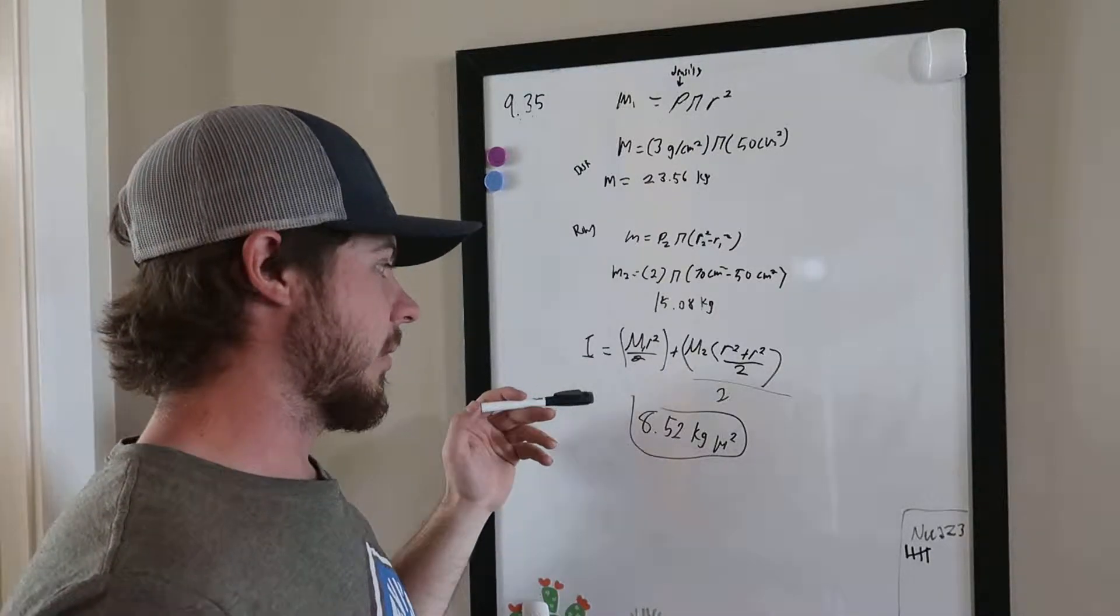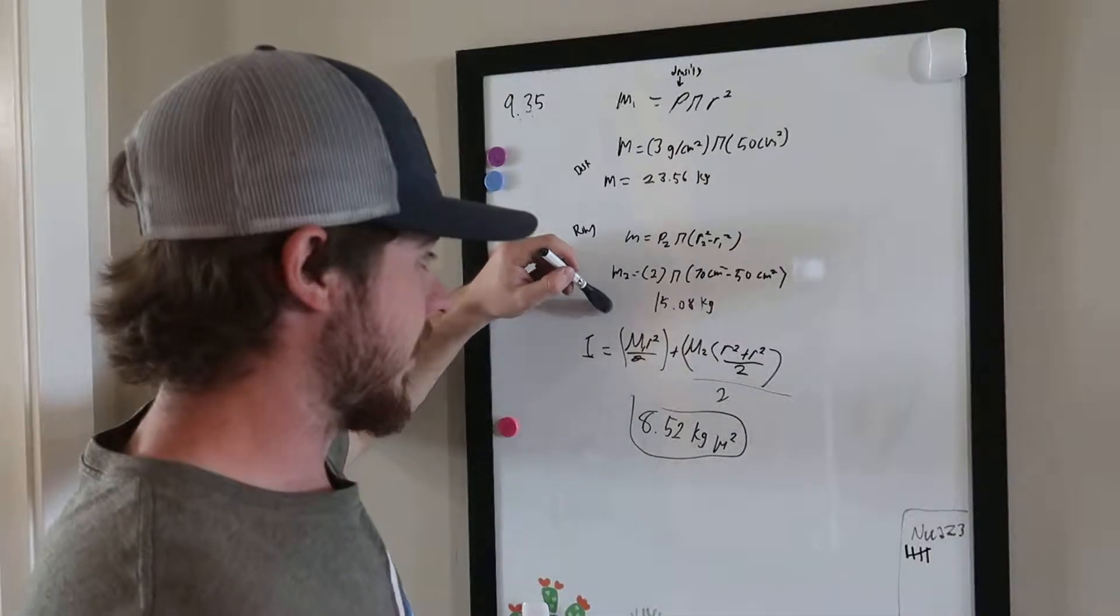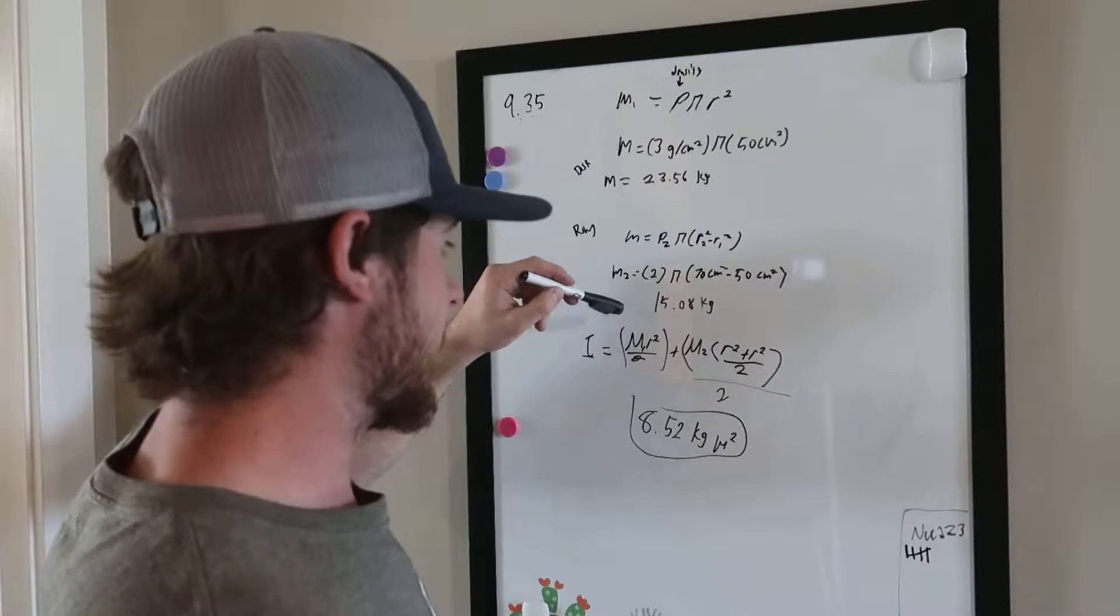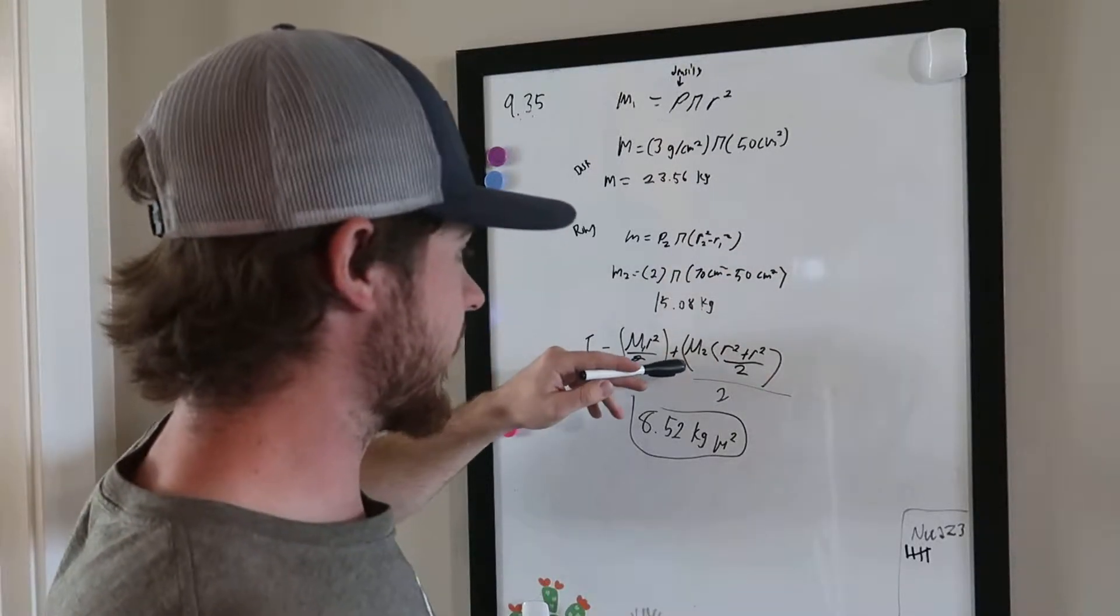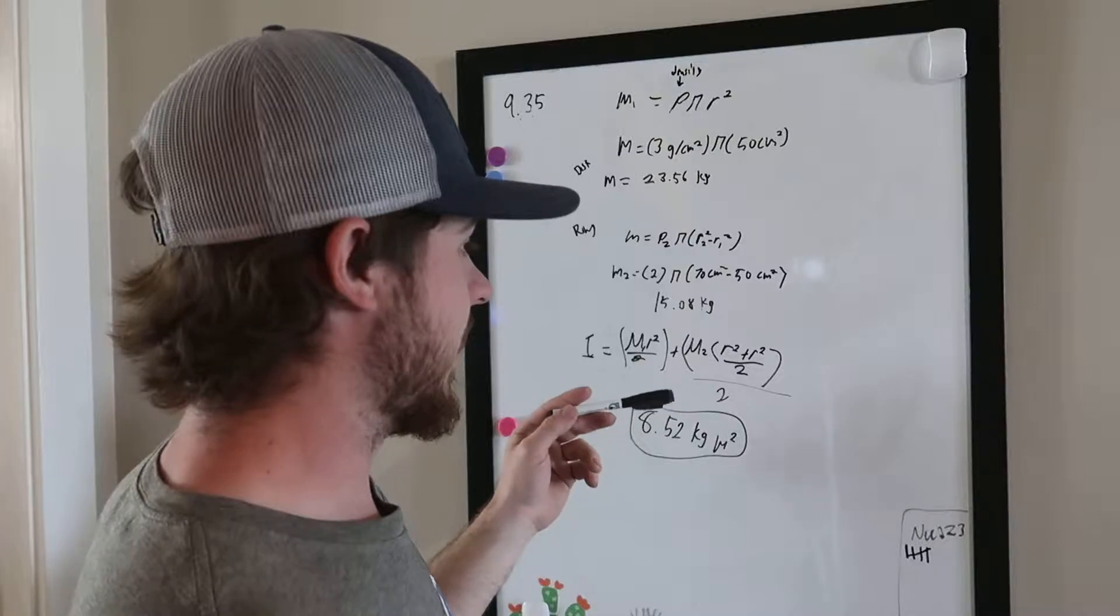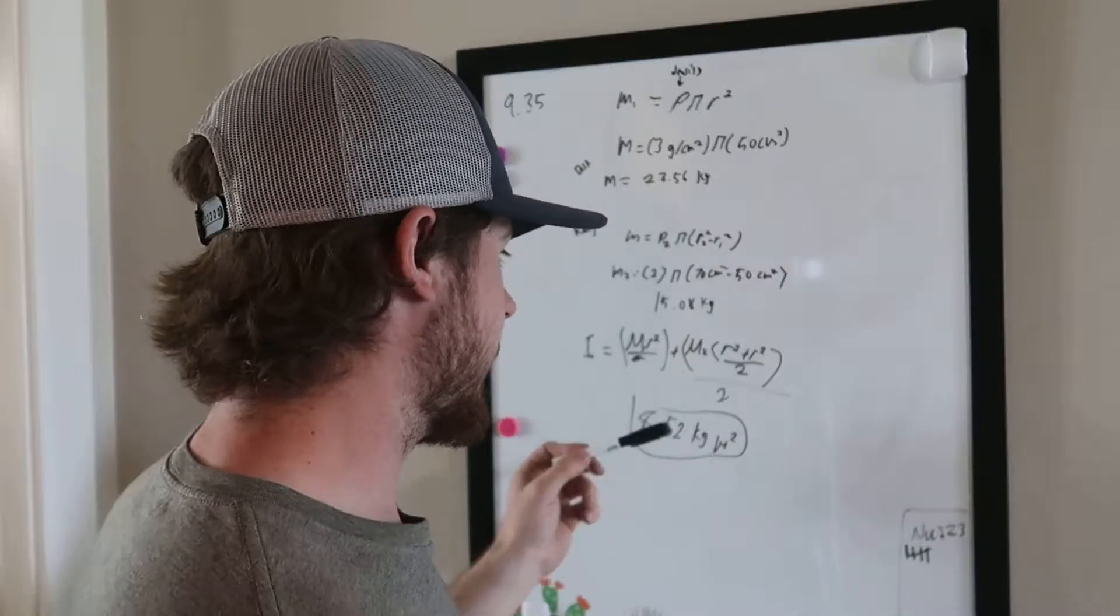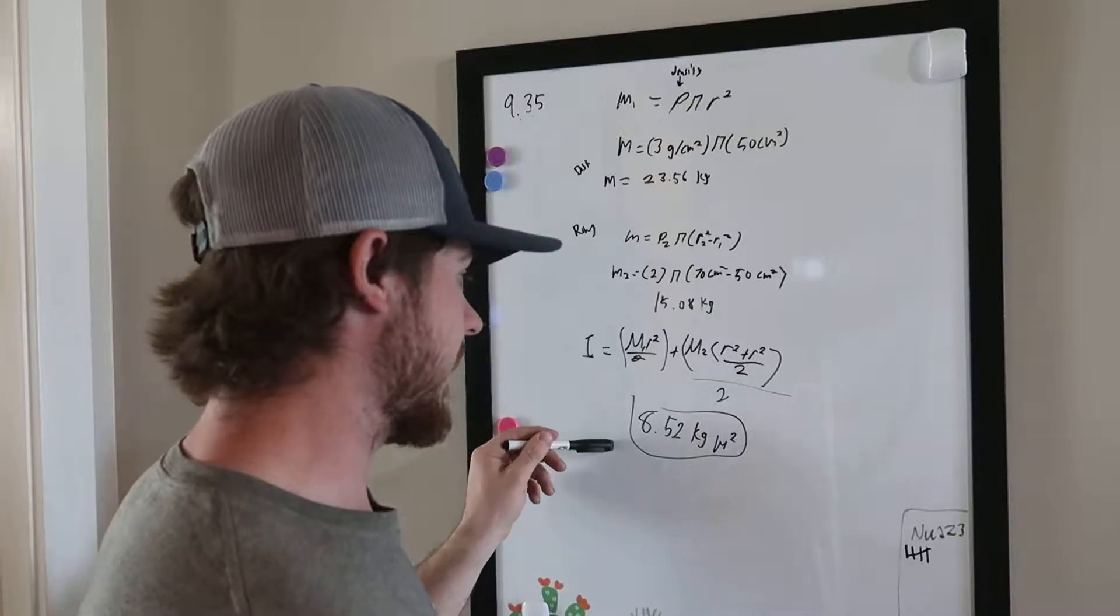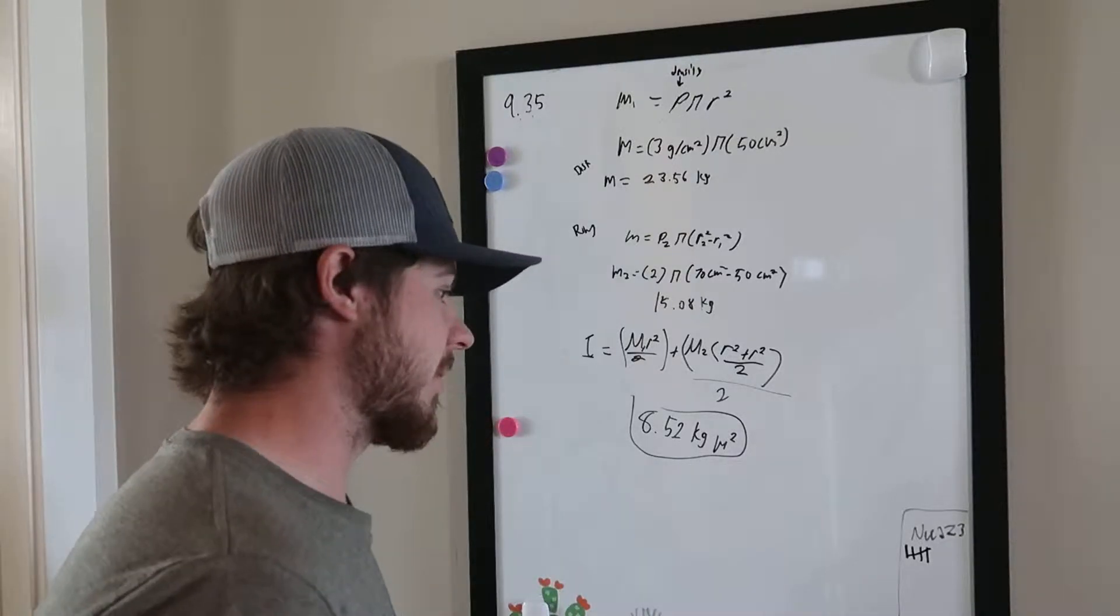we have the mass of the disk multiplied by the radius squared over 2, plus the mass of the ring multiplied by the radius squared divided by 2. That ends up being 8.52 kilograms per meter squared.